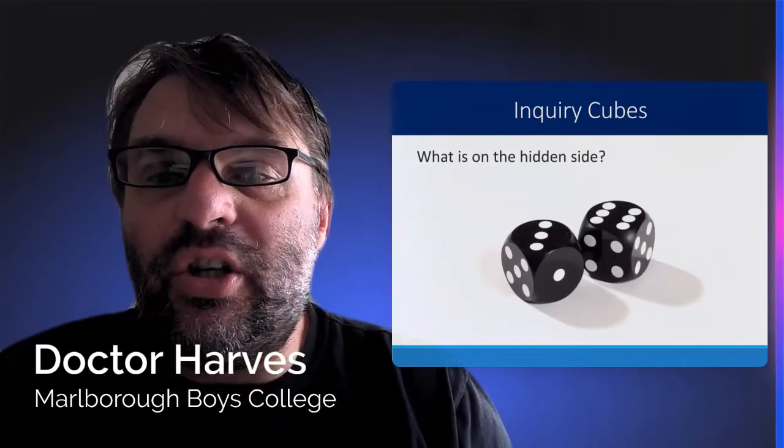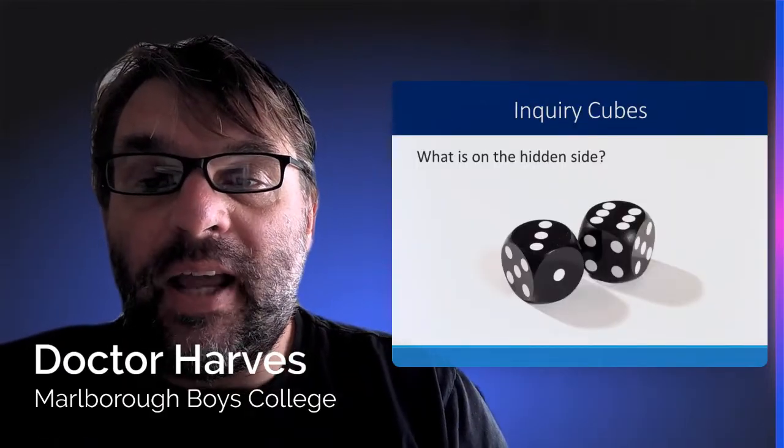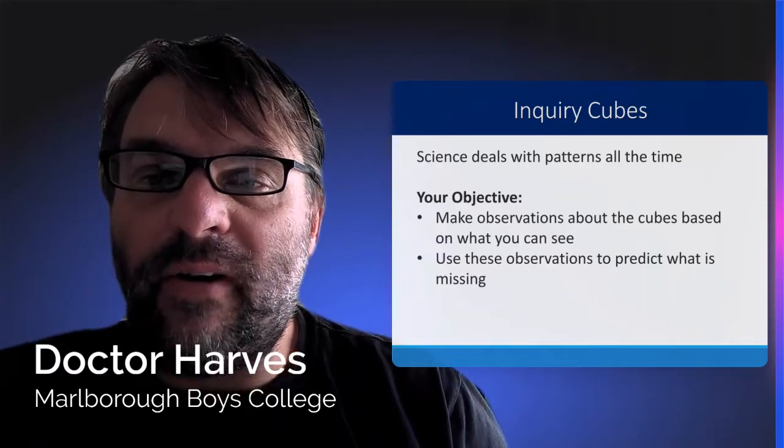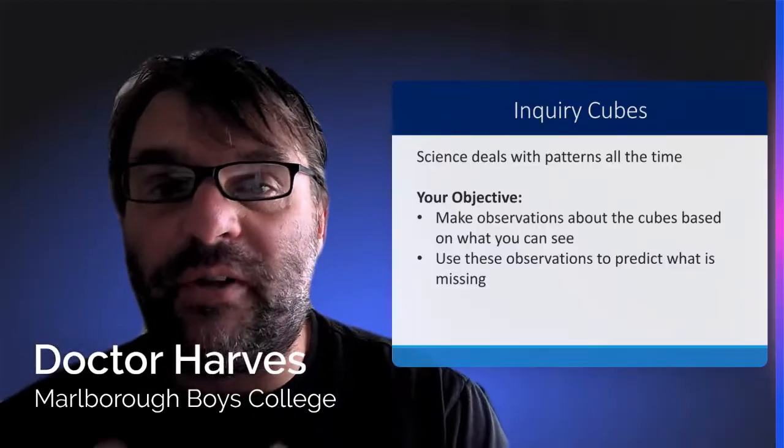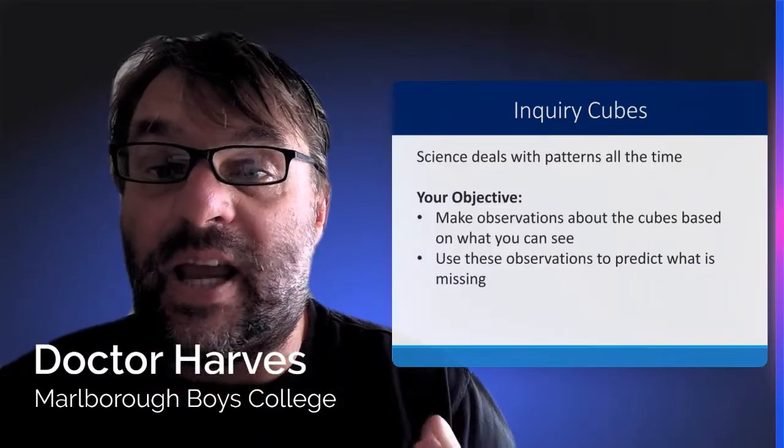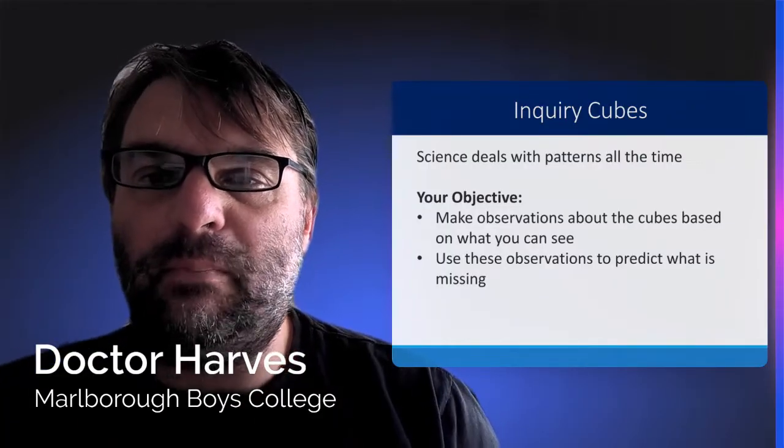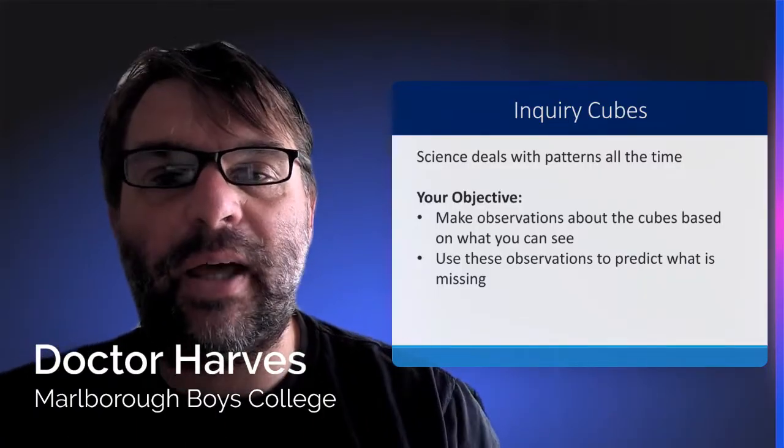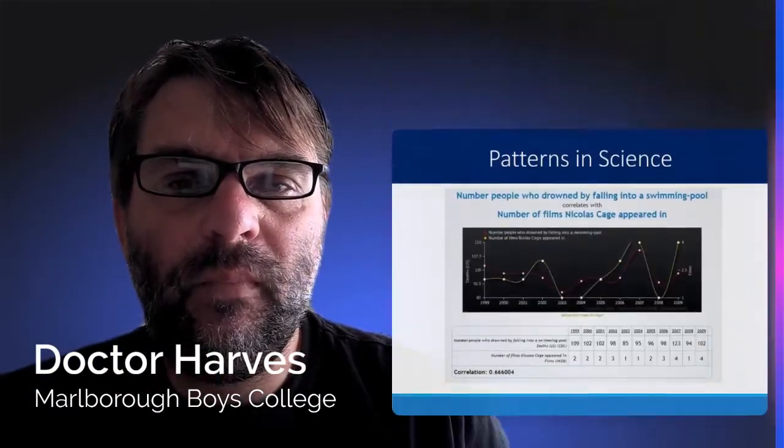An illustration of science is a couple of dice. What's on the hidden side? If you look and make observations about the cubes based on what you can see, you will observe that the two sides opposite each other are going to equal seven. Then you can use these observations to predict the unknown number that you cannot see. That's an example of physics in action. We're making observations, making a mathematical model, and using that mathematical model to make predictions about what's going to happen. Then we check that prediction and see if it matches our mathematical model. If it doesn't, we go back and observe further.